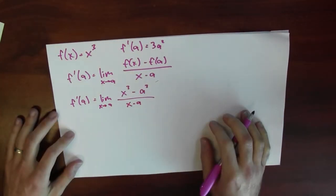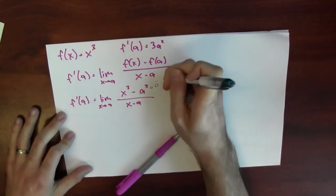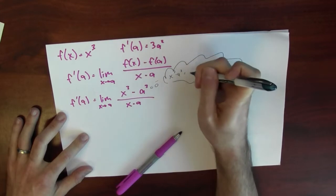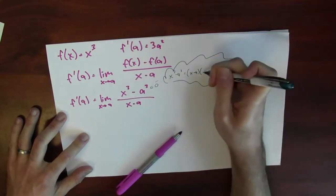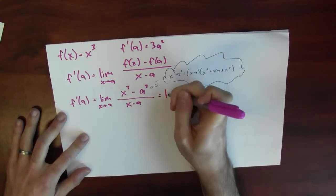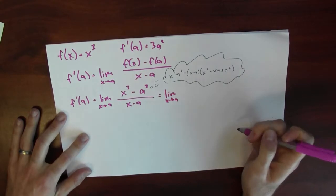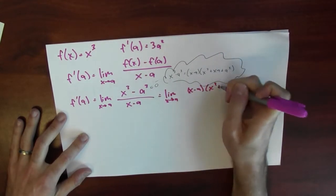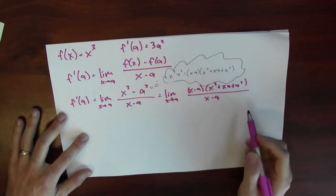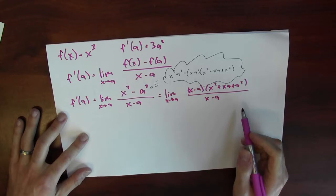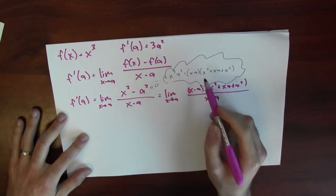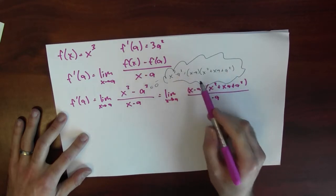How do I evaluate that limit? Well, here's the thing to think about: this numerator factors. How does it factor? x cubed minus a cubed is equal to x minus a times x squared plus xa plus a squared. Now I can use that fact to simplify this limit. If you're a little concerned about how this factorization happened, we're just going to apply the distributive law and make sure that everything results in x cubed minus a cubed. x times x squared gave x cubed, minus a times a squared gave minus a cubed, and then everything else cancels.